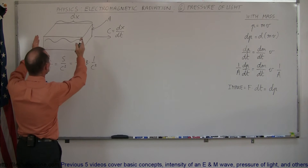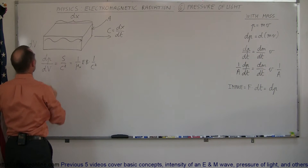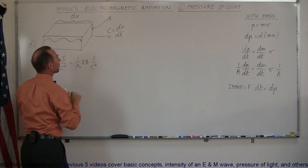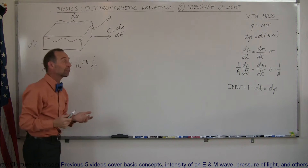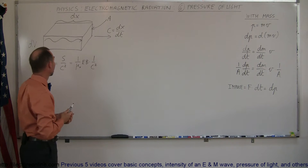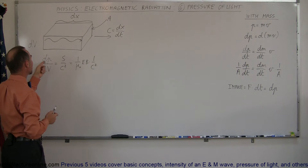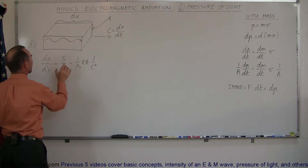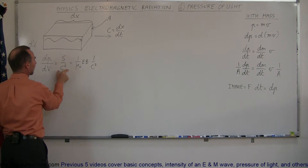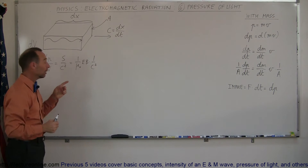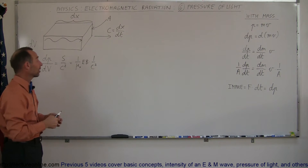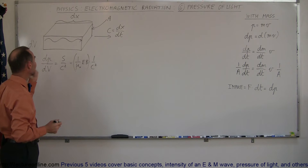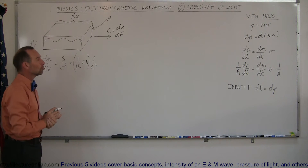Imagine we have a volume here, we'll call this volume dv — a certain amount of volume. It has a certain amount of length dx, it has a cross-sectional area A, it's filled with electromagnetic radiation, and that radiation is moving at the speed of light c, which we can write as dx/dt. If we now define the change in momentum per unit volume — the momentum contained within this volume per unit volume — we know that's equal to the magnitude of the Poynting vector divided by c squared. The magnitude of the Poynting vector equals the intensity of sunlight, which can be defined as 1 over mu-naught times E times B divided by c squared, and we define that as the momentum contained within this unit volume.